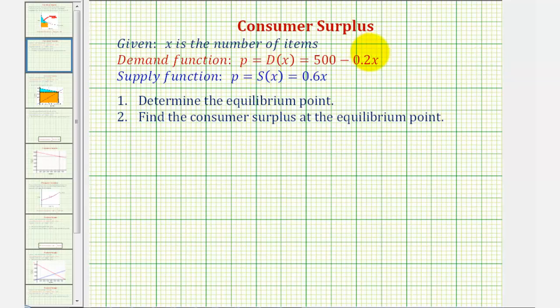Welcome to an example on consumer surplus. We're given x is the number of items, the demand function is D(x) and the supply function is S(x). We want to determine the equilibrium point and then find the consumer surplus at the equilibrium point.